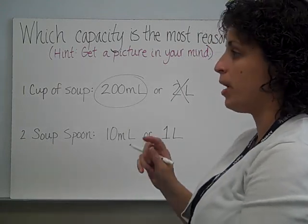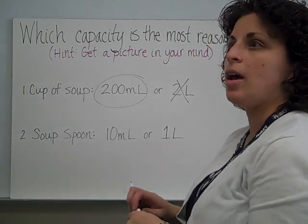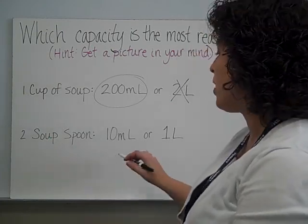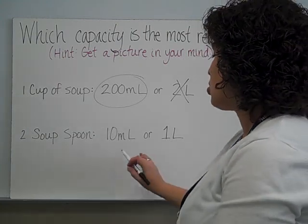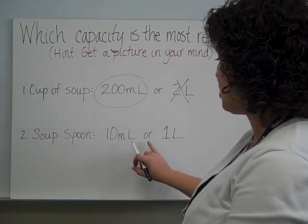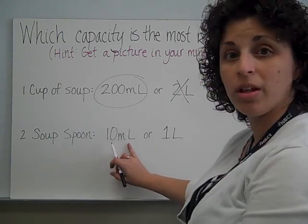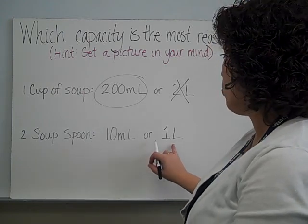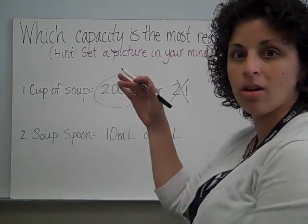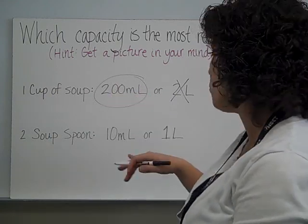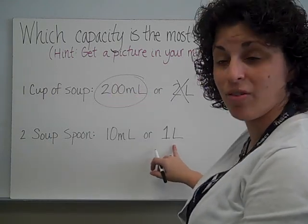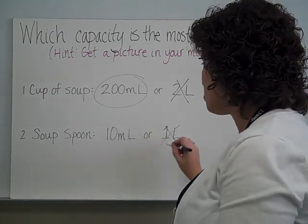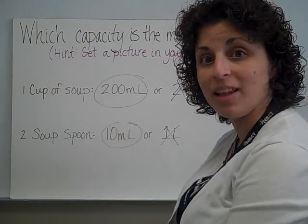What about a soup spoon? Spoons are still small. I've got a choice of 10 milliliters or one liter. Milliliters are small, and there would be 10 of them — that could probably fit on a spoon. One liter? If two liters is the big container of soda at the store, then one liter would be half of that. Definitely not going to get half a bottle of soda on one spoon. So this one is out — it must be 10 milliliters.